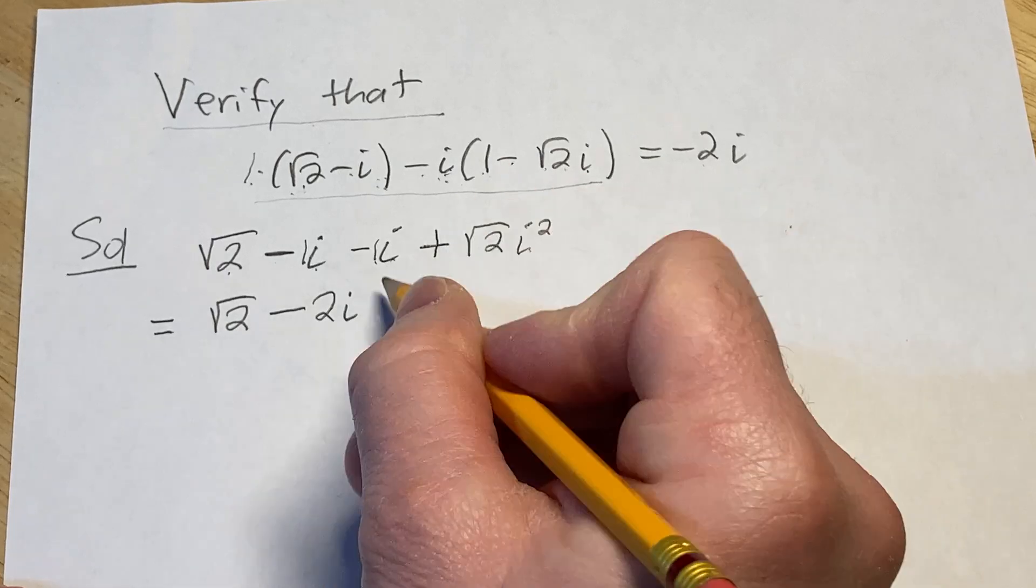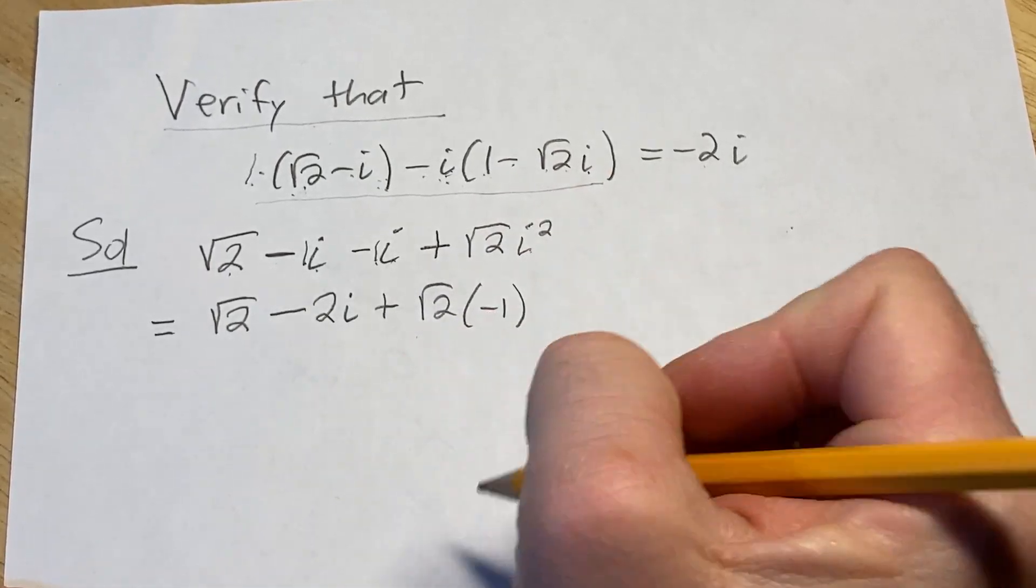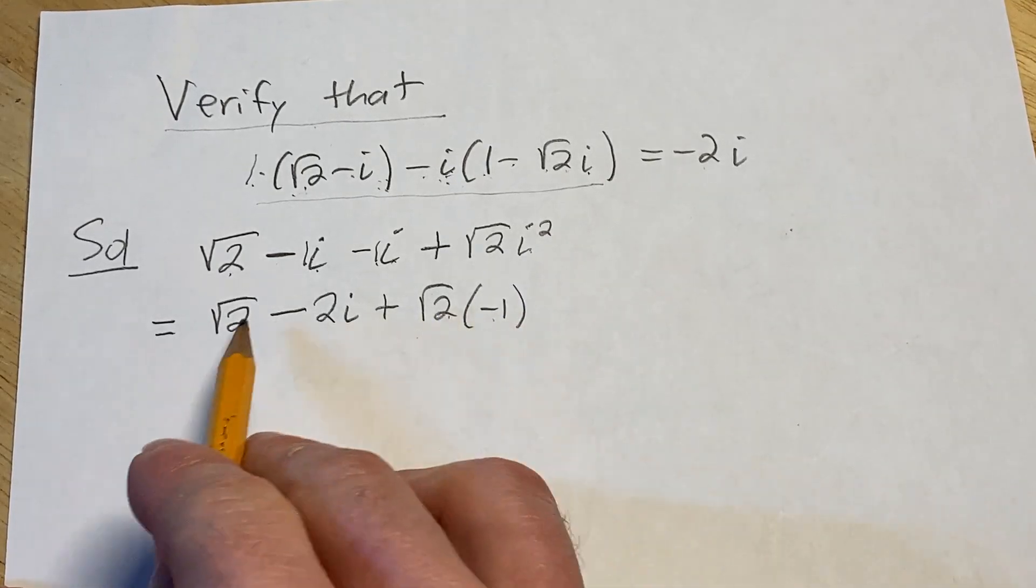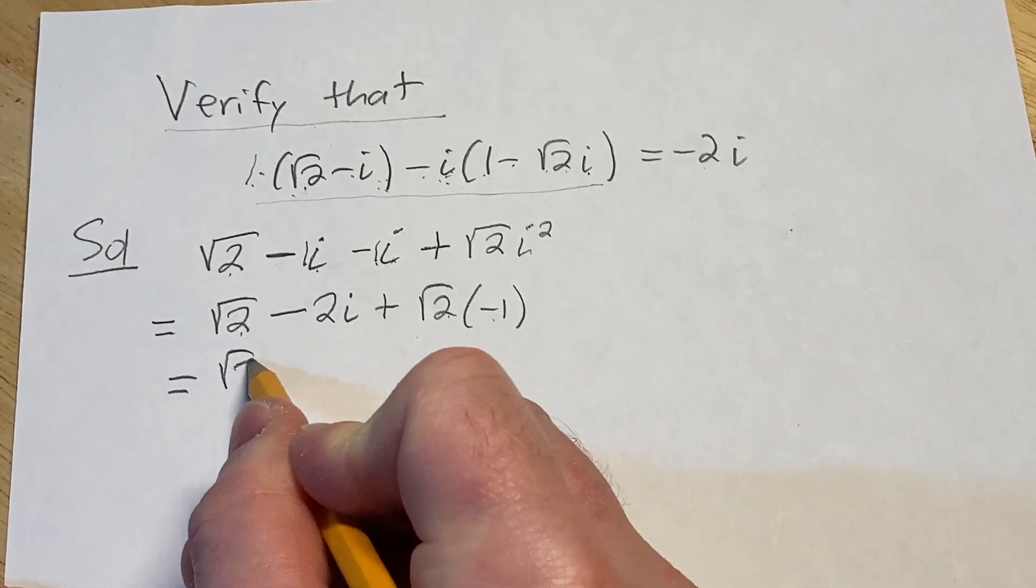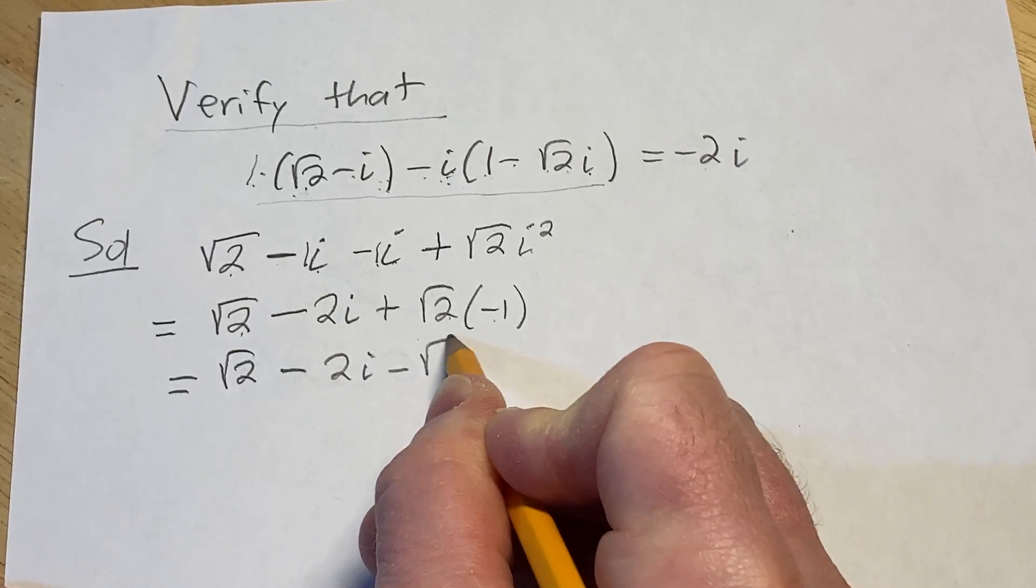i squared is negative 1, so this is plus the square root of 2 times negative 1. And this is nice because now we have negative square root of 2 and a positive square root of 2. Let me just go ahead and show one more step. The square root of 2 minus 2i and then here we have minus root 2.